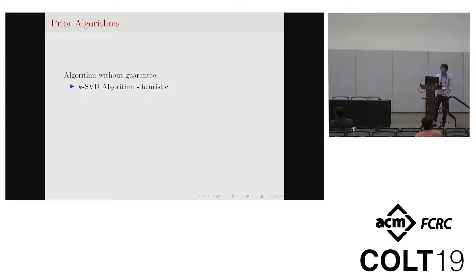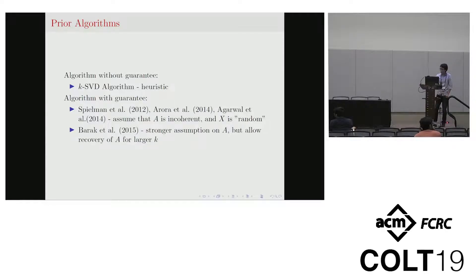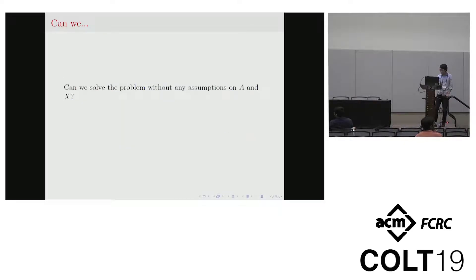So here are some previous results. We can use K-SVD algorithm which has no guarantee on the problem because this is a heuristic algorithm. And then there are some other works, but they either make some assumption on the matrix A, the dictionary matrix A - they assume that A is incoherent, or they assume that X is from a generative model, which means that under some probabilistic model X is generated. Then the question we would like to ask here is: can we solve the problem without any assumption on A and X if we are allowed to relax m and k?